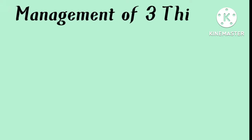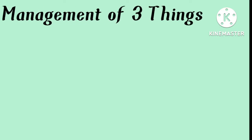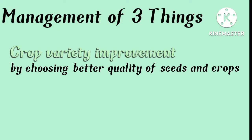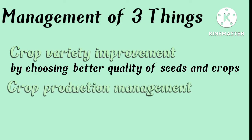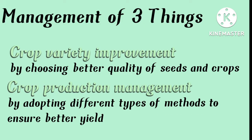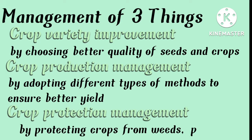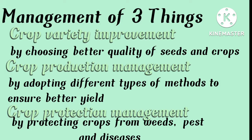This was achieved because of three things we need to manage. First, crop variety improvement — by choosing better quality seeds and crops. Second, crop production management — by adopting different methods to ensure better yield. Third, crop protection management — by protecting crops from weeds, pests, and diseases.